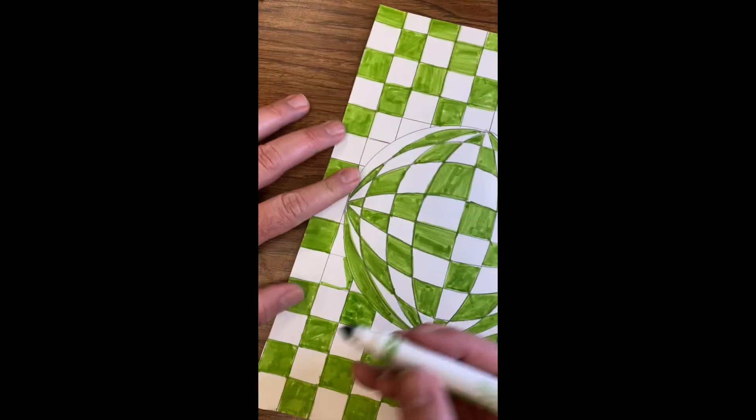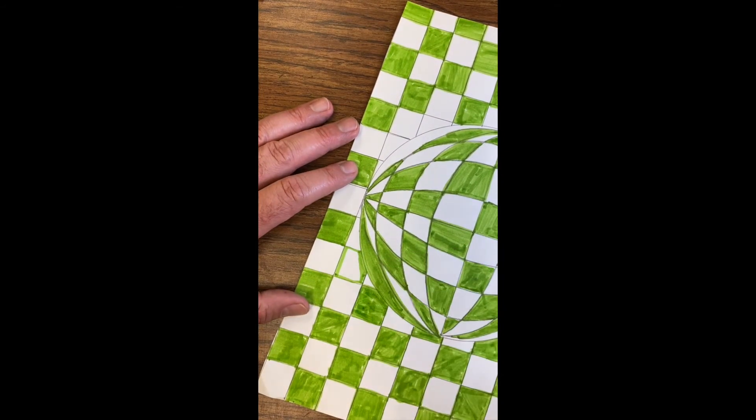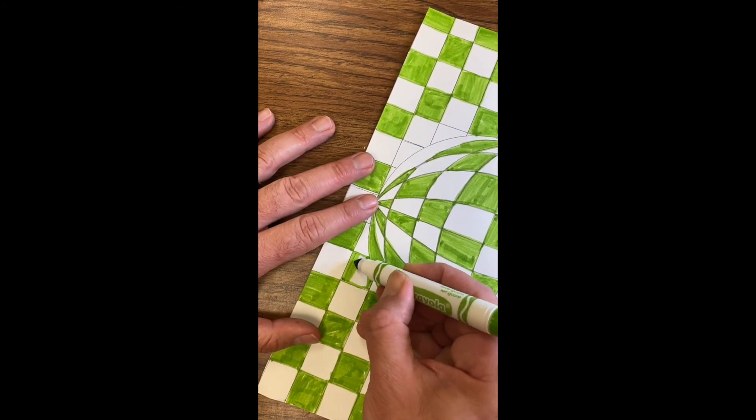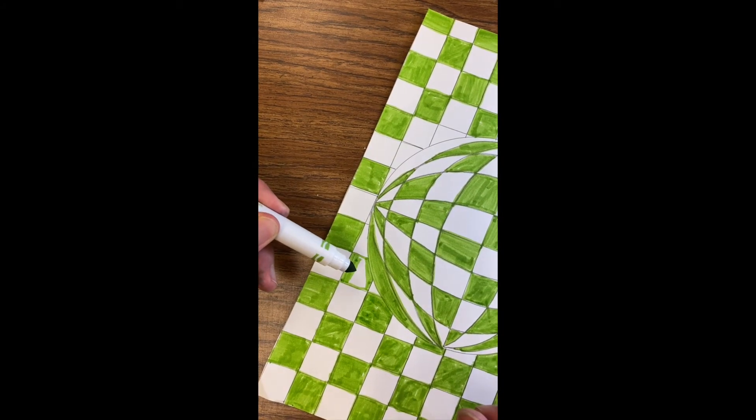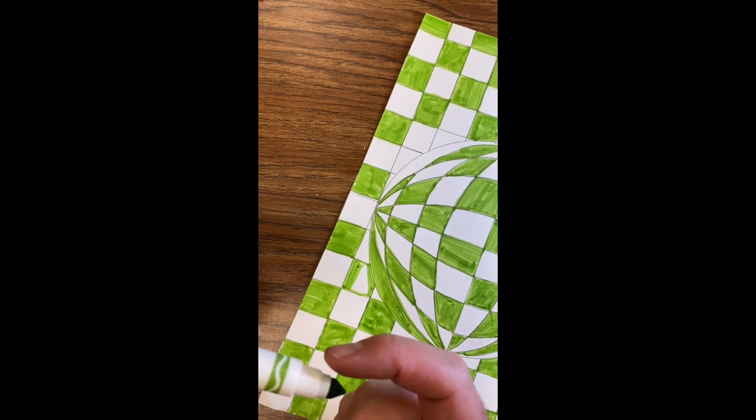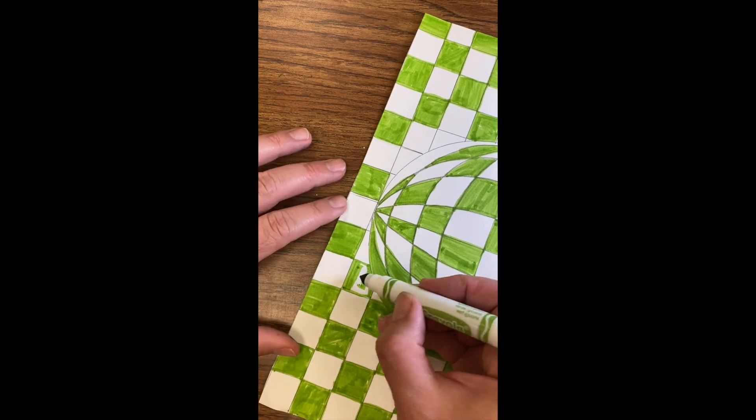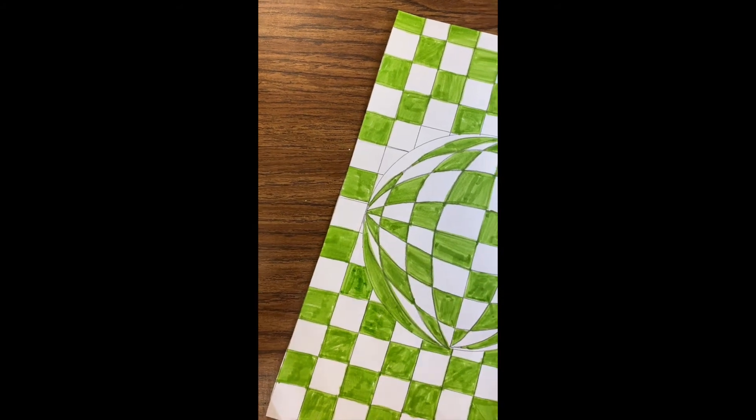One thing to note, when you outline like this and then you color, it's nice to point the tip of your marker towards the outside. That way, if you approach it a different way, like pointing on the inside, this cone might make marks in places you don't want them. All right guys, I'm going to fast forward the video.